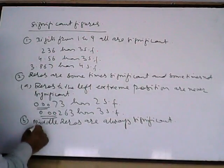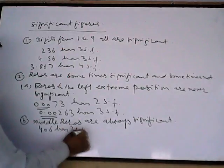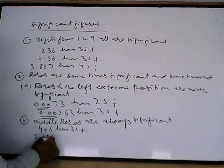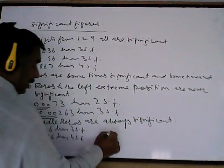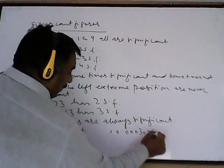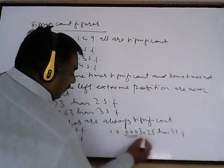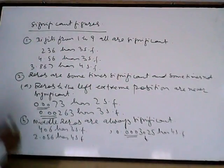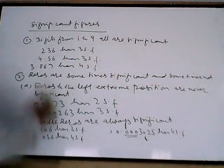For zeros in the middle of a number, they are always significant. For example, 406 has 3 significant figures — the zero in the middle is significant. Similarly, 2.056 has 4 significant figures, and 0.0003025 has 4 significant figures — the leading zeros are not significant but the middle zero is.